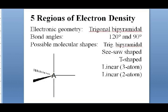Five regions of electron density give us a trigonal bipyramid — an equilateral triangle with one atom above and one below. It has two different bond angles: 90 degrees between the equatorial and axial atoms, and 120 degrees within the equatorial plane. Removing lone pairs gives: seesaw for one lone pair, T-shaped for two lone pairs, and linear three-atom or two-atom for more.